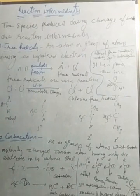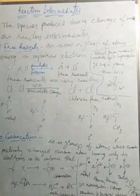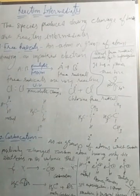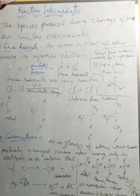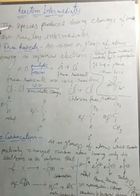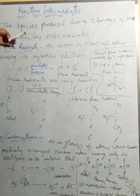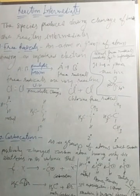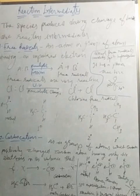Hello students, good morning and welcome to my YouTube channel. Today's topic is reaction intermediates, which is a component of organic reaction mechanisms. It is the third component — the first is the reactant or substrate, the second is the reagent, and the third is the reaction intermediate. The different types are: first, free radicals; second, carbocations; and third, carbanions.